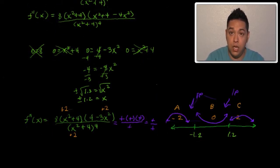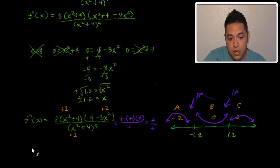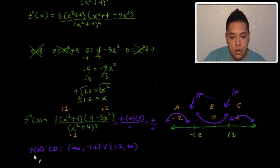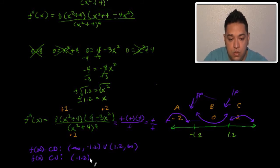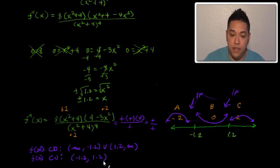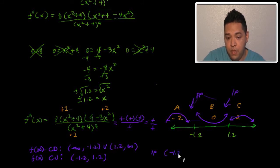Let's label the concavity intervals. f(x) is concaving down on (−∞, −1.2) union (1.2, +∞). f(x) is concaving up on (−1.2, 1.2). Those are our concavity intervals. We're going to have two inflection points: one at (−1.2, something) and another at (1.2, something).